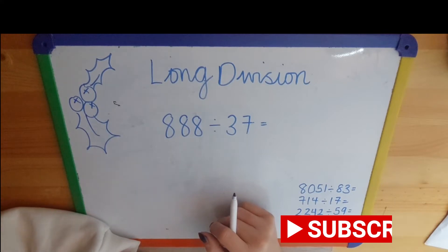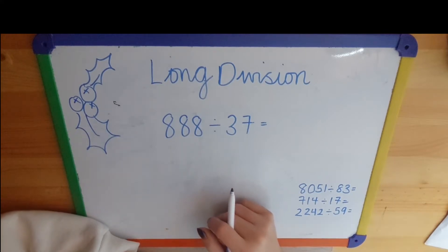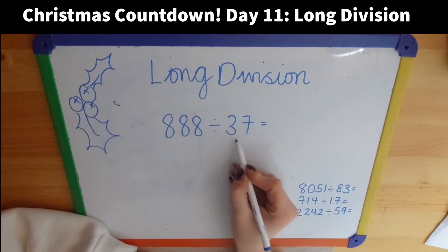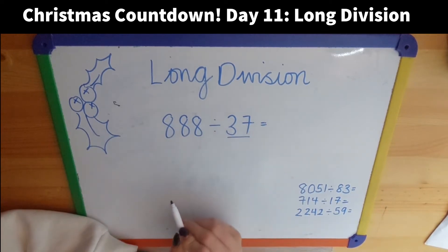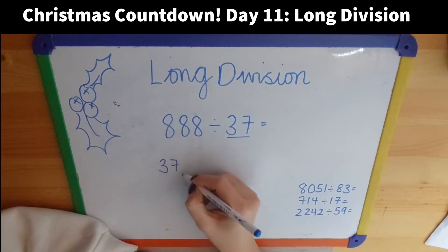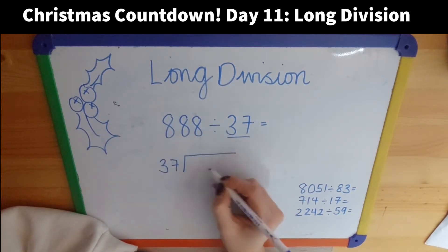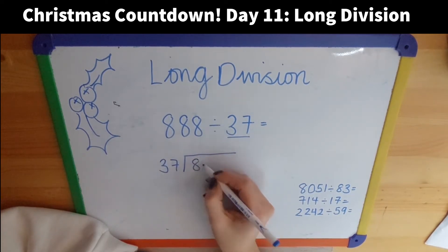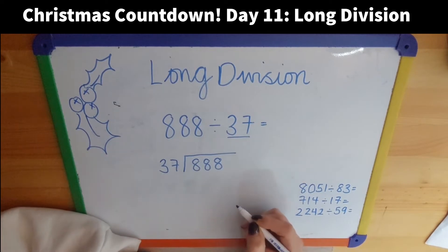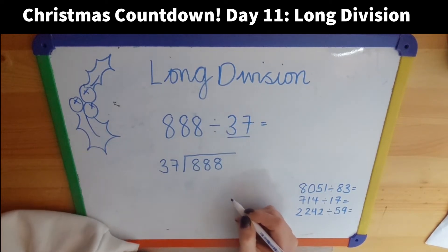Hey everyone, welcome back. Today we're going to look at long division and how you can divide by a two-digit number using the bus stop method. I'm going to get my question set up. What I'm looking for is to see how many times 37 goes into 888.